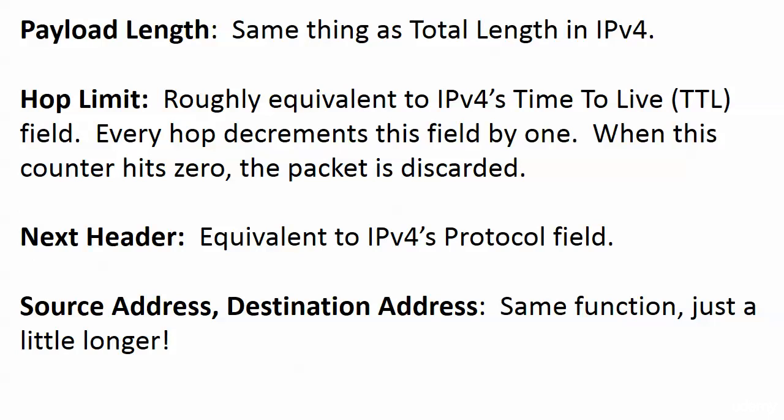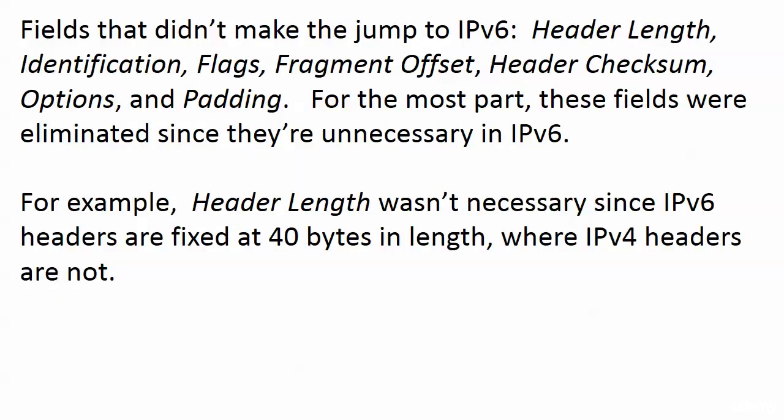Hop limit is a rough equivalent to version 4's TTL (time to live) field - every hop decrements that field by one, and when the counter hits zero, TTL becomes TTD: time to be discarded, because that's exactly what happens. The next header field in version 6 is equivalent to version 4's protocol field. Source address and destination address are the same functions as in version 4, just a bit longer.